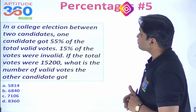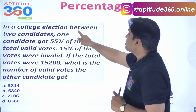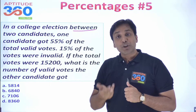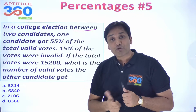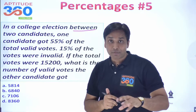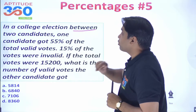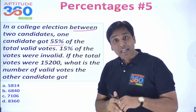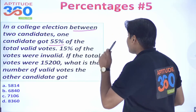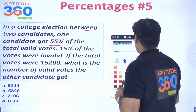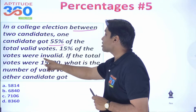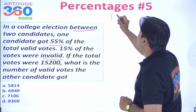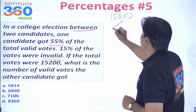The next problem: In a college election between 2 candidates, one candidate got 55% of the valid votes. Note — it is 55% of valid votes, not all votes. 15% of votes were invalid. The total votes cast are given as 15,200.